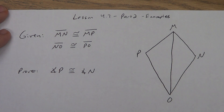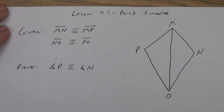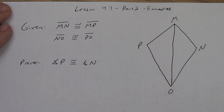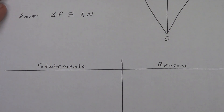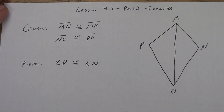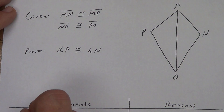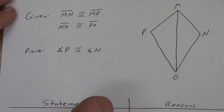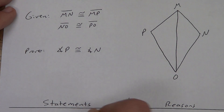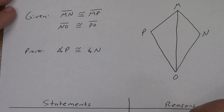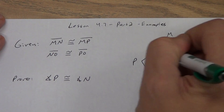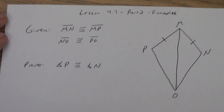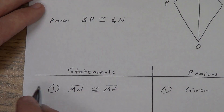I'm going to get started here right away. We have statements and reasons. We're going to start off with our givens. MN is congruent to MP — that's a given. Remember, we need to mark up our picture, so MN and MP get the same marks. Off to the side, we like to write S for side or A for angle.